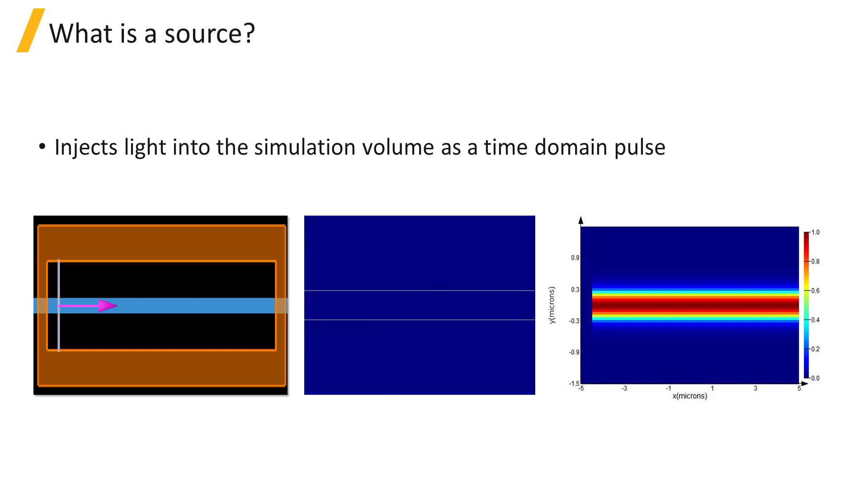Sources inject light into the simulation region. The fields from the source are injected as a pulse over time which propagates through the simulation volume and interacts with the surrounding structures.